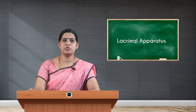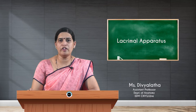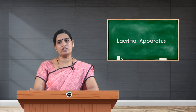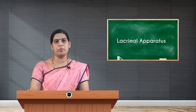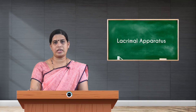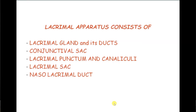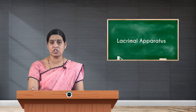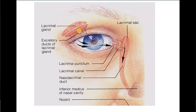Hello students, welcome to this session. Today I am going to present regarding the topic of the lacrimal apparatus. Once the term apparatus comes, it includes some constituents — it has got five important components forming the lacrimal apparatus. Those five components are: the lacrimal gland with its excretory ducts, the conjunctival sac, lacrimal puncta, lacrimal canaliculi, lacrimal sac, and lastly the nasolacrimal duct. I am going to explain all these components briefly.